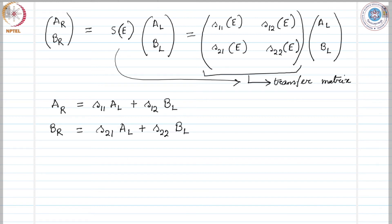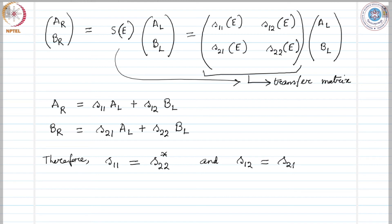This transfer matrix can be obtained by integrating the Schrödinger equation. Notice that the complex conjugate of any solution of the Schrödinger equation is itself a solution for the same energy. Therefore, we can write S_11 = S_22* and S_12 = S_21* — these constraints must hold in order to have a valid solution. Furthermore, we can show that the determinant of the transfer matrix is 1, which means the matrix is unimodular.